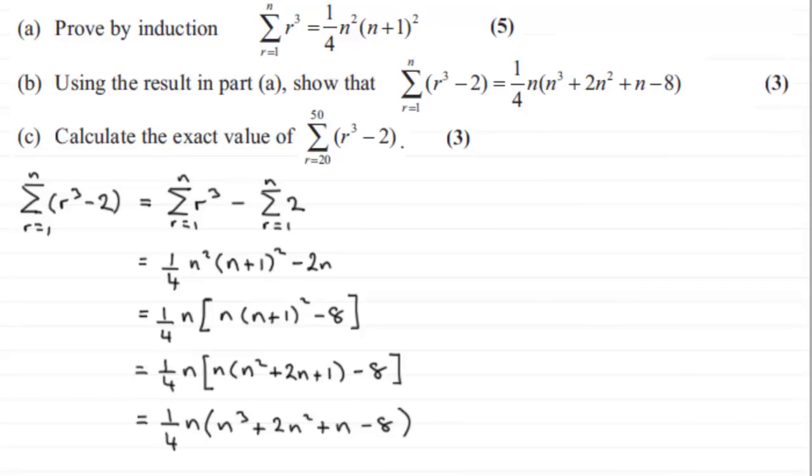Okay now for the next part, part C, calculate the exact value of r cubed minus 2 going from r equals 20 to 50 when we sum it. So again we'll just put down what we're asked to find, that is r equals 20 to 50 of r cubed minus 2.